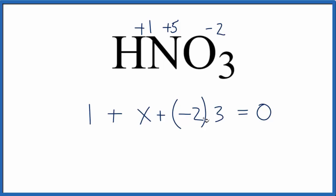Then we solve for X, we have a minus 6 and a plus 1, so that'd be minus 5, and then I can add 5 to both sides, so that cancels out, and X is going to equal a plus 5, which is the oxidation number on the nitrogen we found earlier.